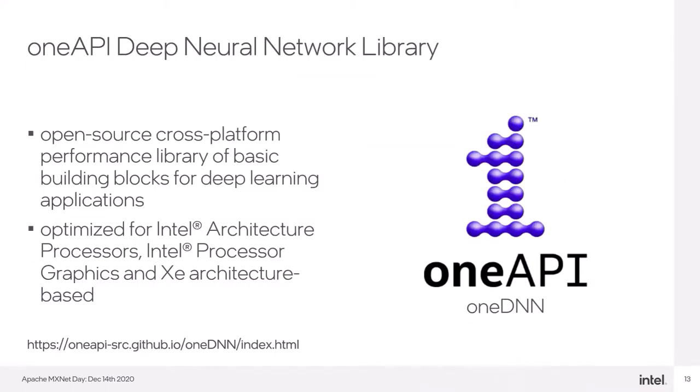All of today's discussed features and results are possible due to MXNet utilizing Intel oneAPI Deep Neural Network library, or just oneDNN, previously known also as MKL-DNN. The library is open source, cross-platform, and specially optimized for Intel architectures, but has also experimental support for others.